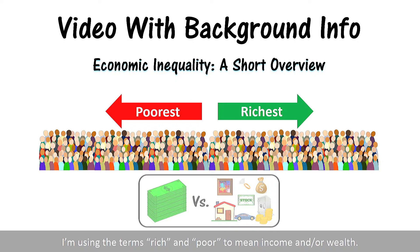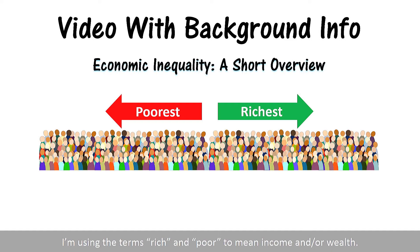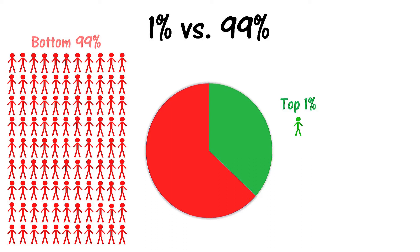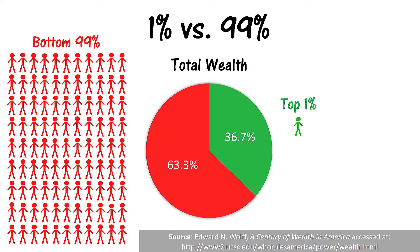When visually examining the relationship between growth and inequality, I'll often use the popular inequality comparison based on the one percent at the top and the 99 percent at the bottom. Specifically, this graphic based on 2013 data shows that the top one percent had 36.7 percent of the total U.S. wealth, while the bottom 99 percent combined for 63.3 percent of the wealth. Even though this is a rather simplified portrayal of inequality, statistics like this help to show the connection between how much income or wealth there is and how it's distributed among the people.